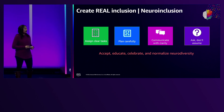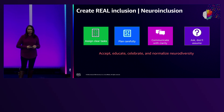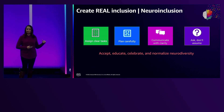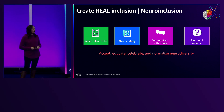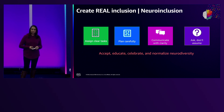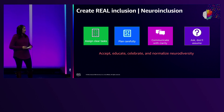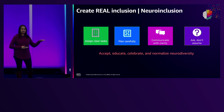The next one is communicate with clarity. We sometimes tend to use jargon or language where we're expecting somebody to read between the lines. Try to avoid that for somebody who may be neurodivergent — spell out exactly what you're looking for. And the last, most important one: we are all unique, and this goes for neurodivergent individuals as well. Always ask what the individual needs to work best. Don't assume.